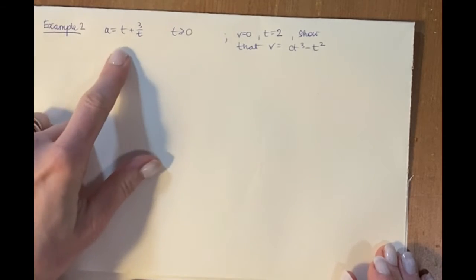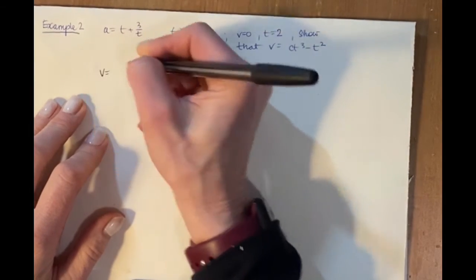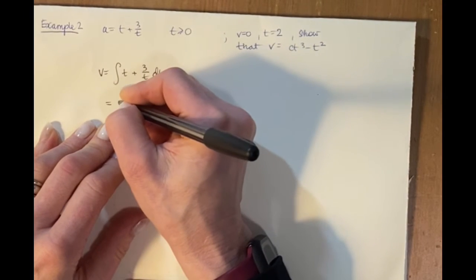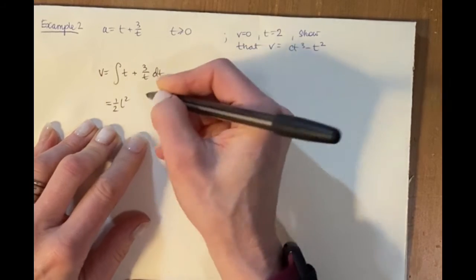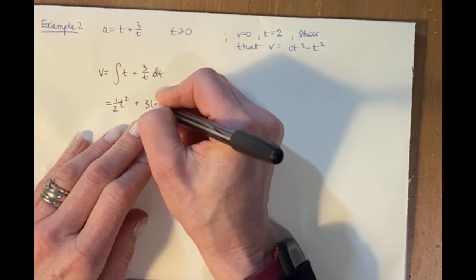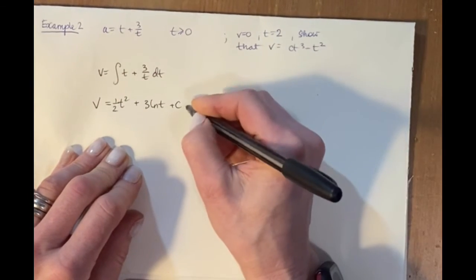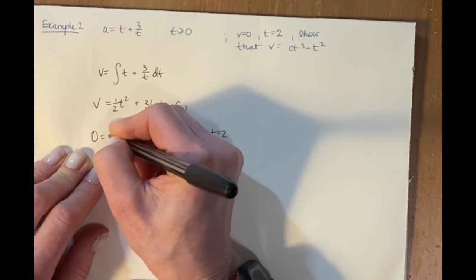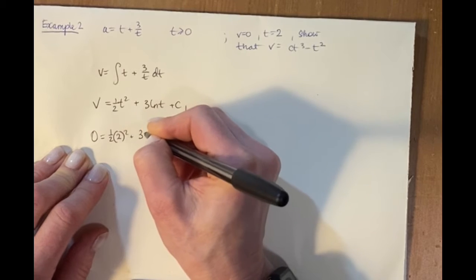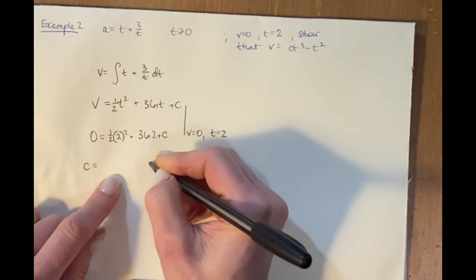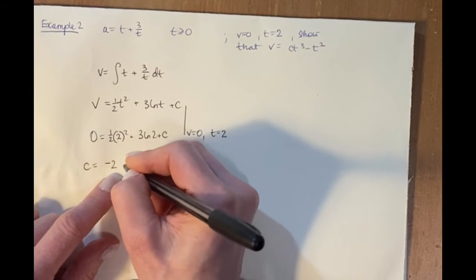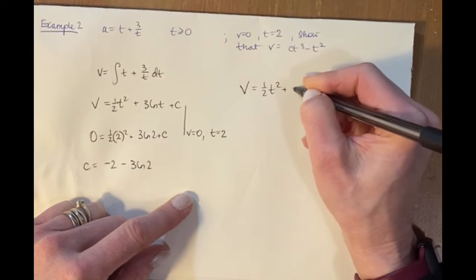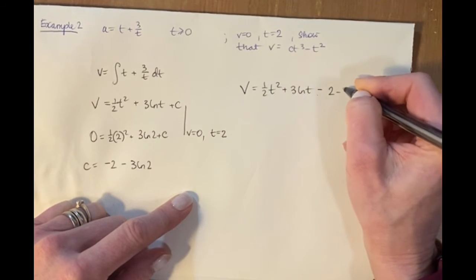Remember, acceleration needs to be integrated to get velocity. Integrating (t/3)/t gives: a half t² plus 3 ln t + c. We're told velocity = 0 at t = 2, not initially. So: 0 = ½(4) + 3 ln 2 + c, giving c = −2 − 3 ln 2. Overall: v = ½t² + 3 ln t − 2 − 3 ln 2.